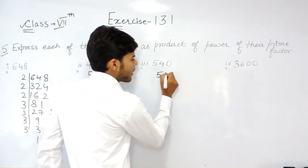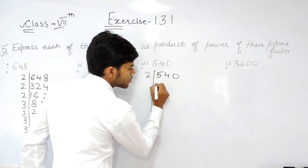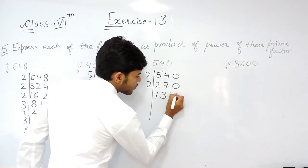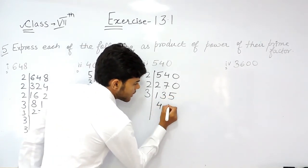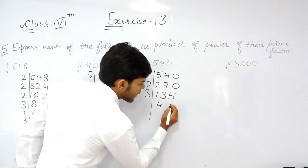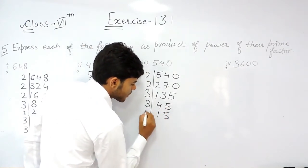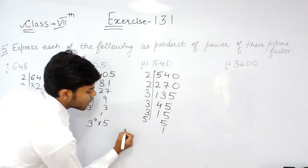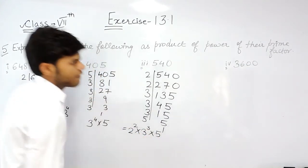Now for 540: 2 times 270, 2 times 135, then 3 times 45, 3 times 15, 3 times 5, and 5 times 1. So we can write this as 2 to the power 2 multiplied by 3 to the power 3 multiplied by 5.